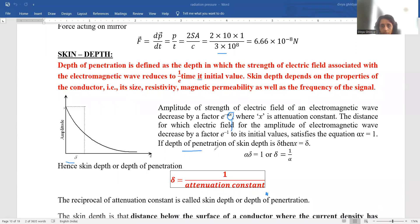If depth of penetration of skin depth is del, then x is equal to del. So skin depth is given by 1 upon attenuation constant. The reciprocal of attenuation constant is called skin depth or depth of penetration.